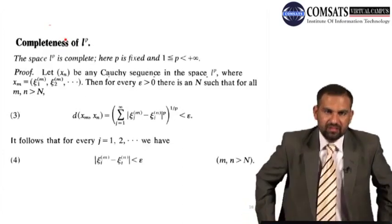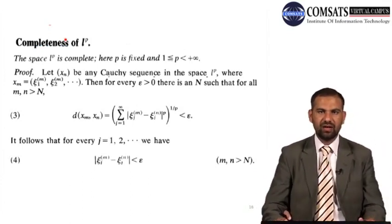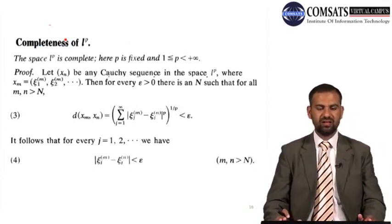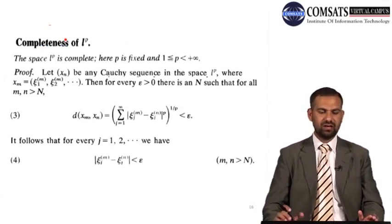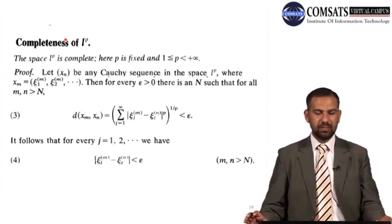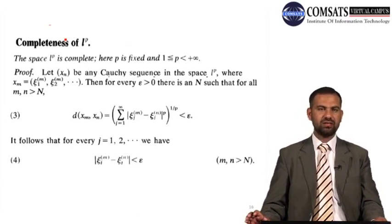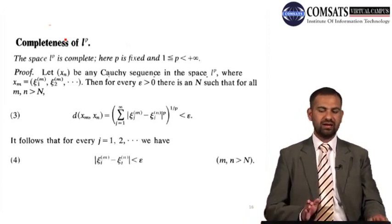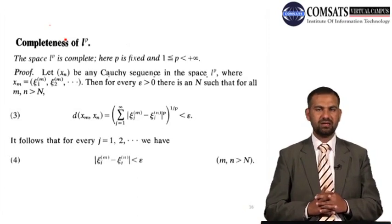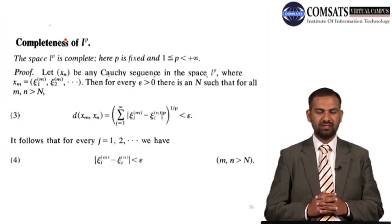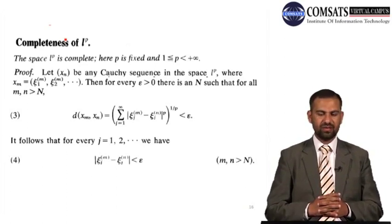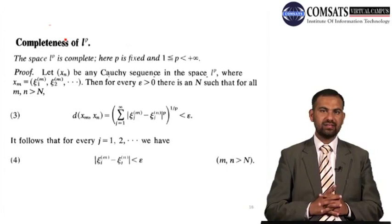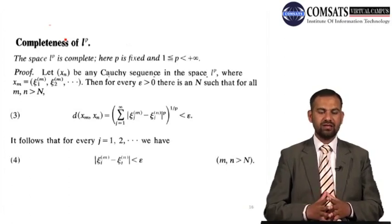Next we discuss the completeness of L^p — the space of all p-summable sequences, where p ≥ 1. This space is also complete. We take any arbitrary Cauchy sequence x_m in L^p, where x_m has the form (x_{i1}^m, x_{i2}^m, ...), and the sequence satisfies sum_j |x_{ij}^m|^p < infinity — i.e., it is p-summable.